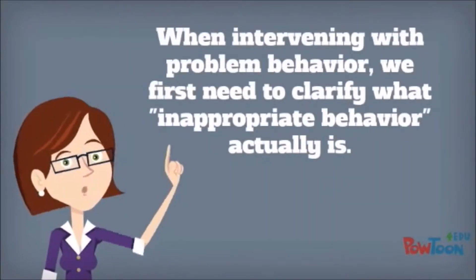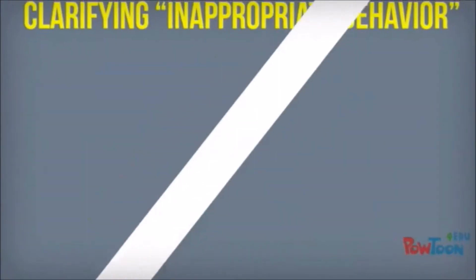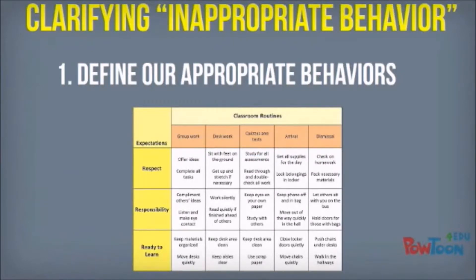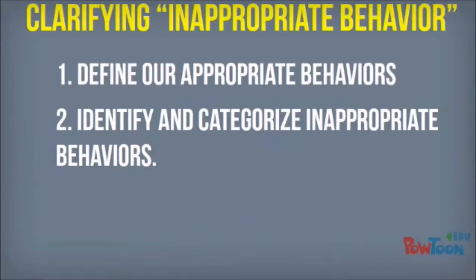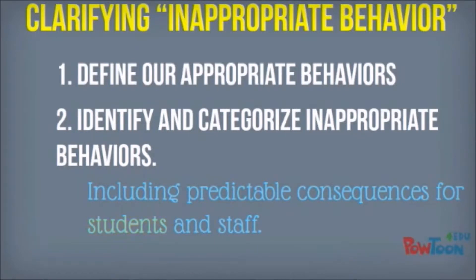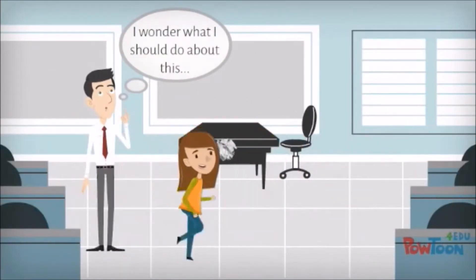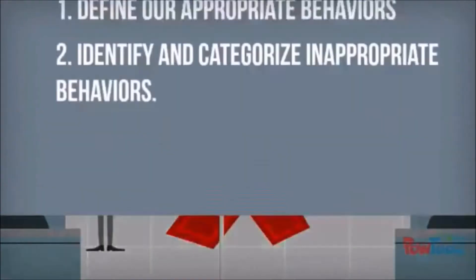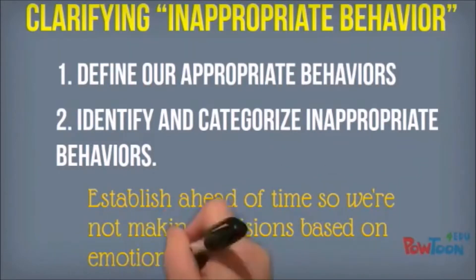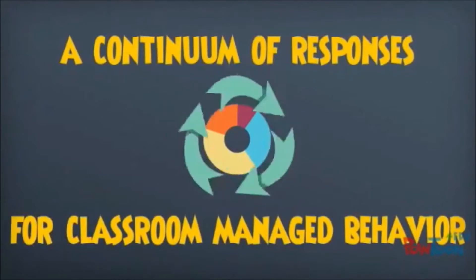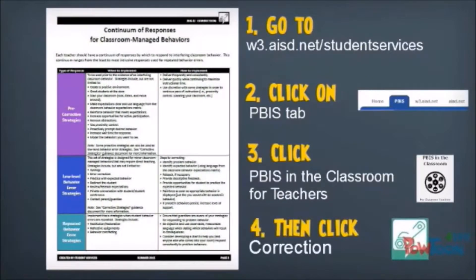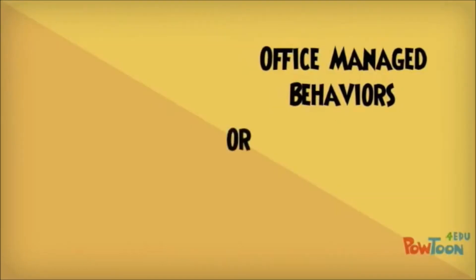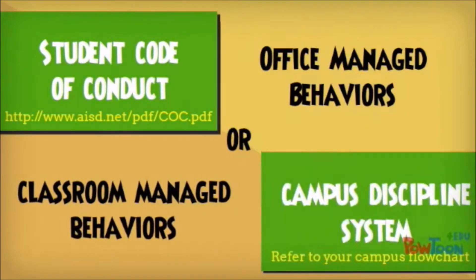When intervening with problem behavior, we first need to clarify what inappropriate behavior actually is. We define appropriate behaviors in our classroom matrix; inappropriate behavior is then defined by default. We need to identify and categorize inappropriate behaviors and establish predictable consequences so students and staff know what to expect. Consequences should be established ahead of time so we're not making decisions based on emotion. Behaviors that are office-managed rather than classroom-managed are determined by the AISD student code of conduct and your campus discipline system.